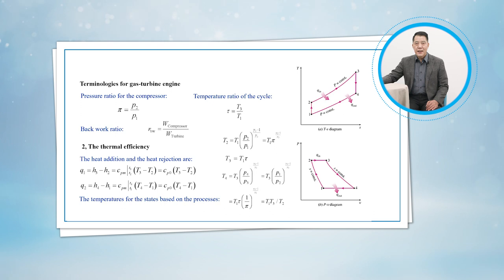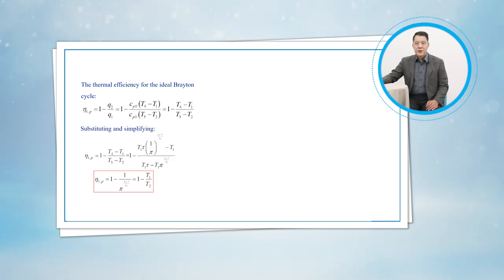Based on the process, the temperatures for the states are. By definition, the thermal efficiency for the ideal Brayton cycle can be expressed as substituting and simplifying yield.